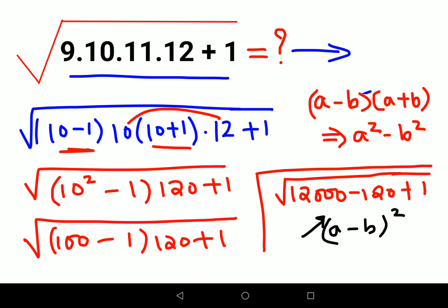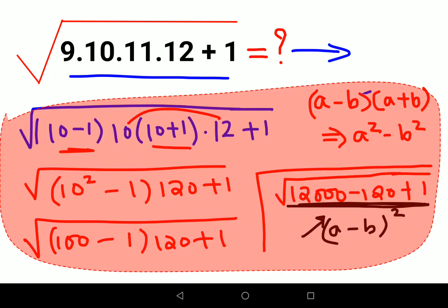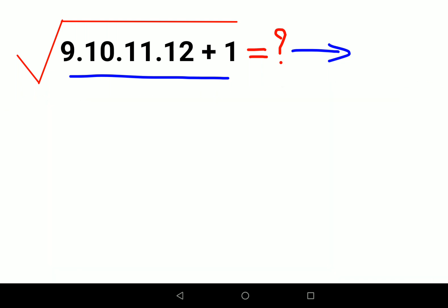Here what I would suggest is whenever you have something like this and you end up at this sum which looks very tricky to find the square root, I would suggest that you actually go back and start again. You will not waste that much time.